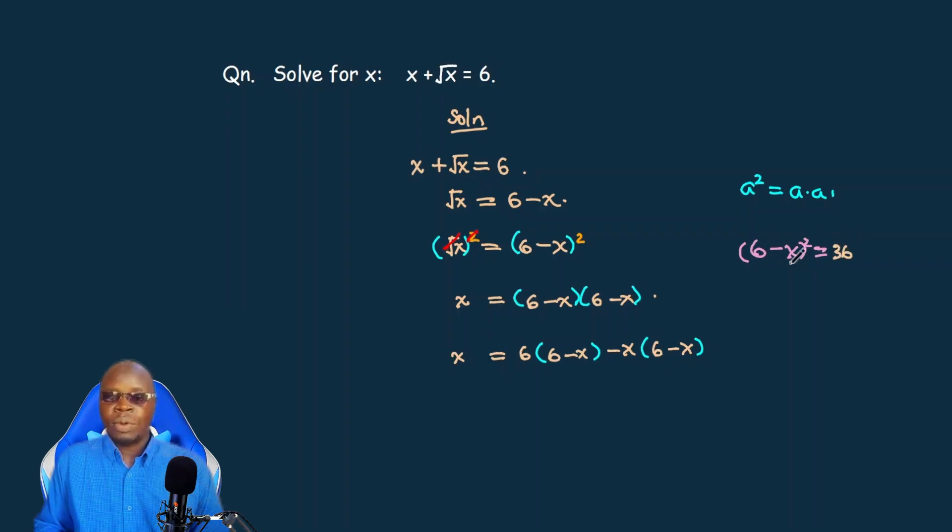Then you double both terms together: 2 times 6 is 12, times negative x we get negative 12x. And you square the last term. The square of negative is positive, so x squared. And that is the result and that is exactly what we are working towards getting here.